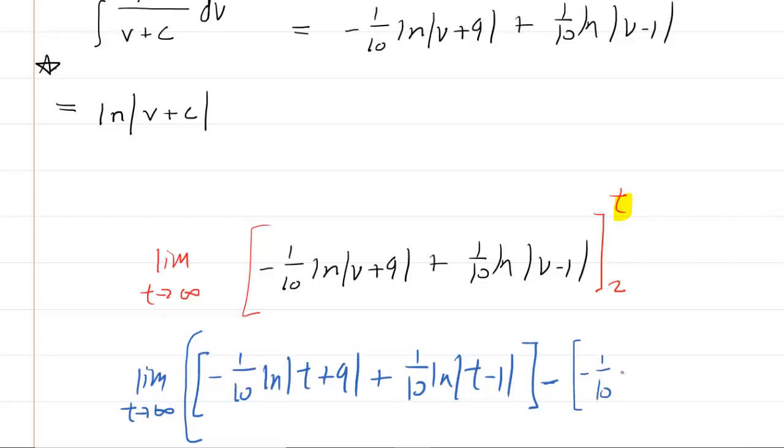And then we have to subtract what we'll get by plugging in the lower bound of 2. So it gets a little messy here. You're going to have negative 1/10 natural log. Now, if I plug 2 in here, 2 plus 9 is 11. So let's just call that ln of 11. And then you have plus 1/10 ln. And then 2 minus 1 is 1. So ln of 1.